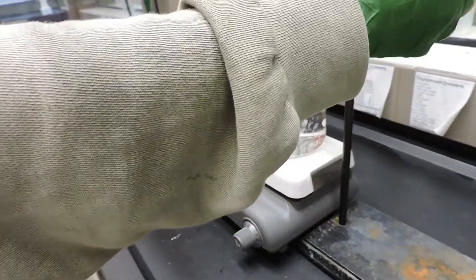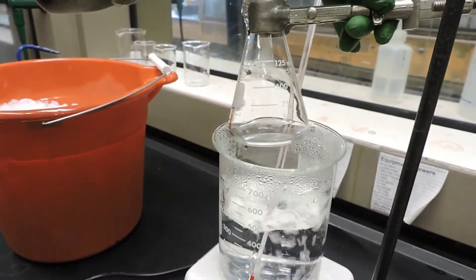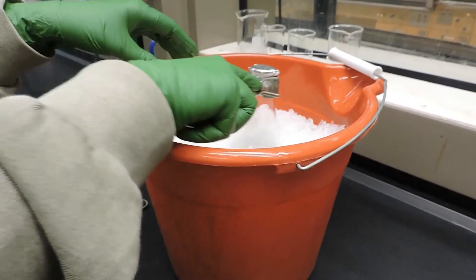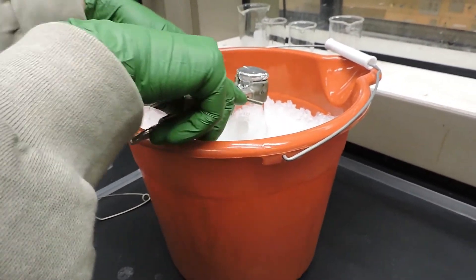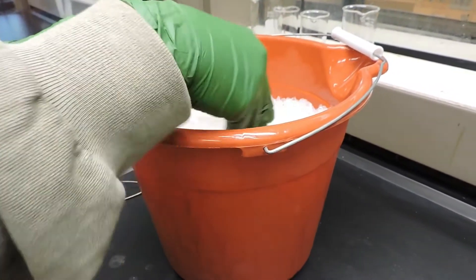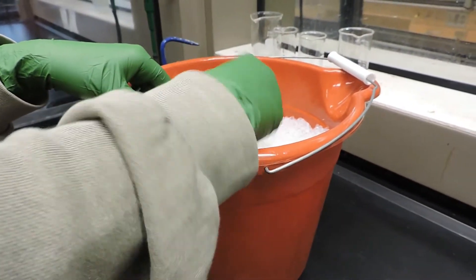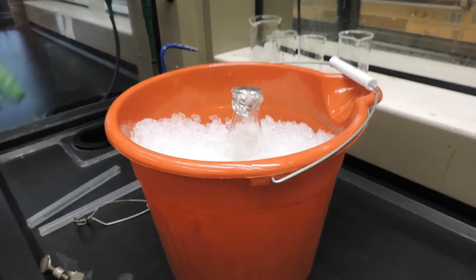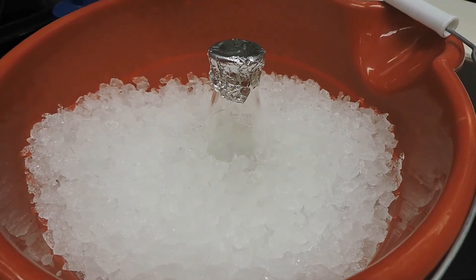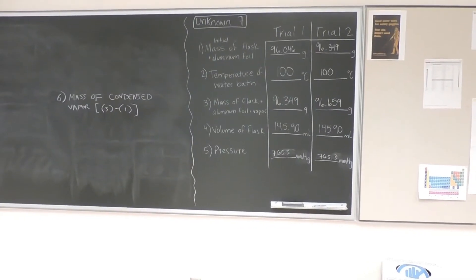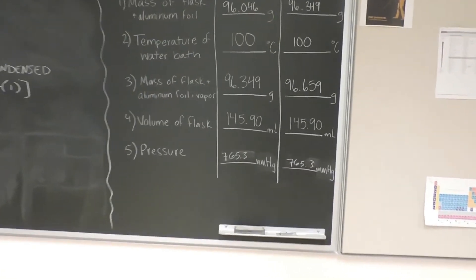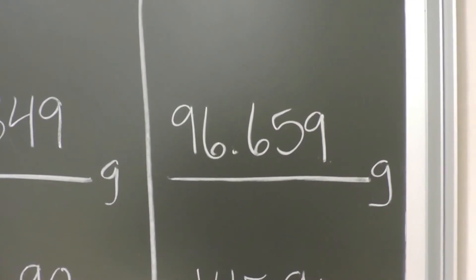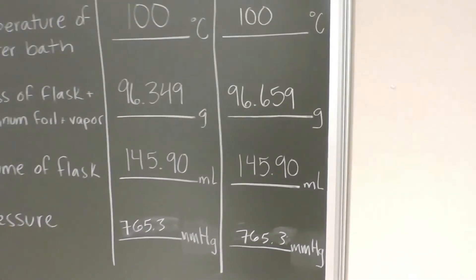All of the solution inside has now vaporized, so we're going to take out the Erlenmeyer and place it on ice to recondense the gas vapor. After we dried the flask from cooling, the final mass of the flask was 96.659 grams, and that is for trial two.